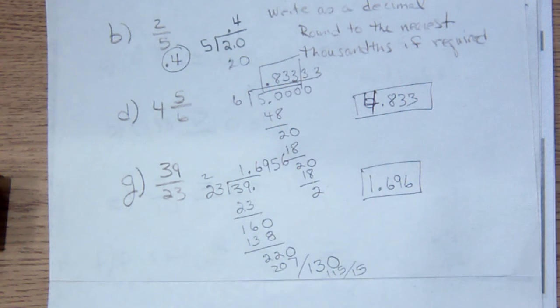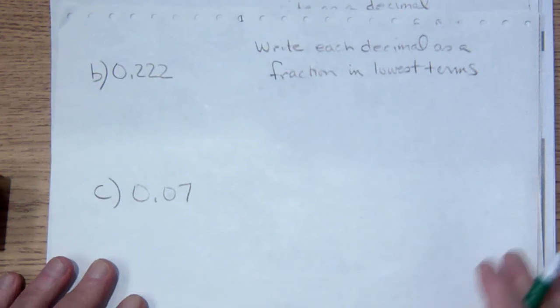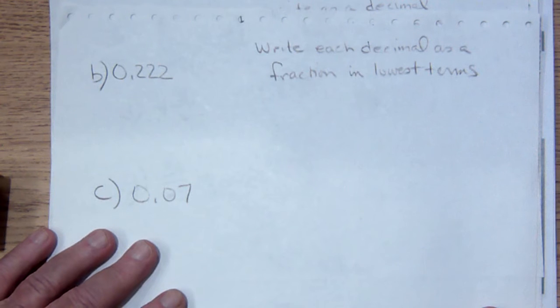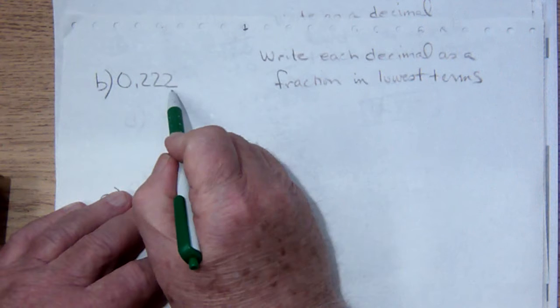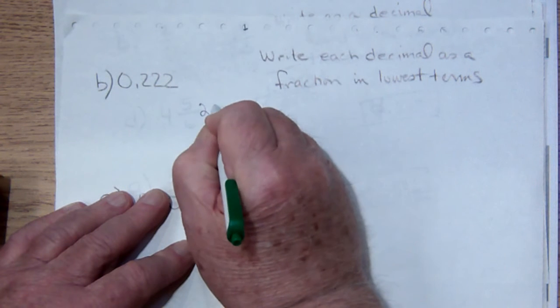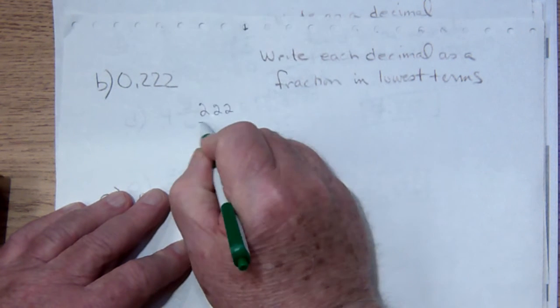The last batch of problems that we're going to discuss, actually we have two more I guess, is writing each decimal as a fraction in lowest terms. Well this is tenths, hundredths, thousandths. So this is 2, 2, 2 over 1,000.